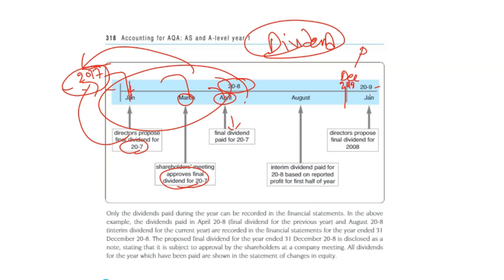Similarly, for 2018, profit earned by December will be proposed in January 2019, then in March 2019 it will be approved, and in April 2019 it will be paid. That is the final dividend cycle. Now, how about interim dividend?